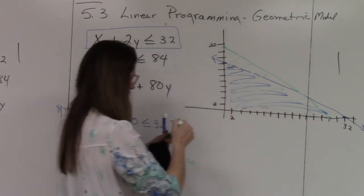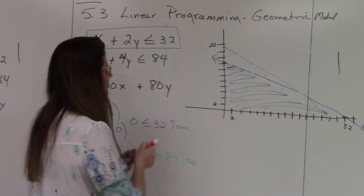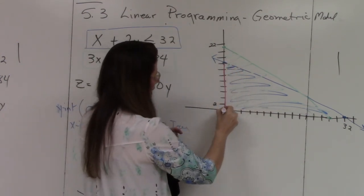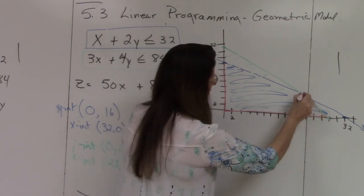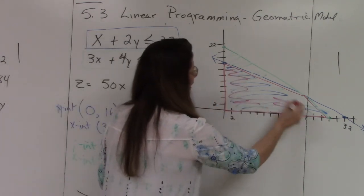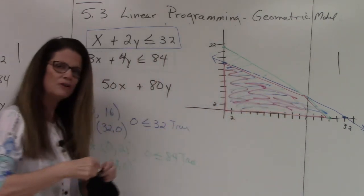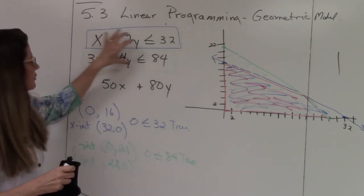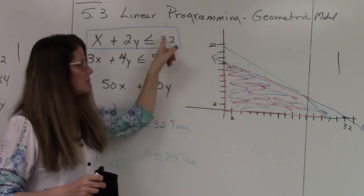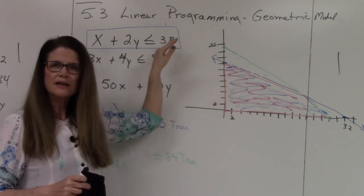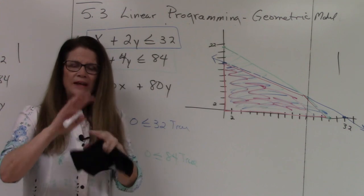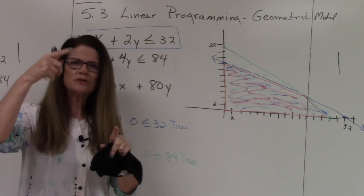So remember, the feasible region is where it's double shaded. So I have blue and green in this region right here. That's where all the solutions are. This is the number of tents I can create and still stay within these parameters, less than 32 hours, less than 84 hours. So I'm going to stop this one, let you sit on it a little bit, and then I'm going to start and finish the problem.